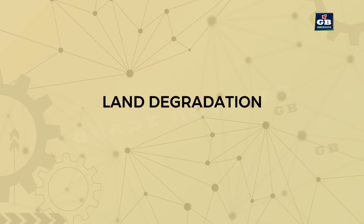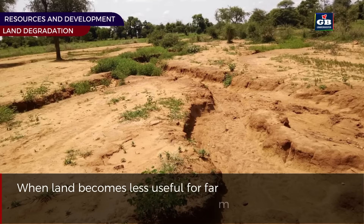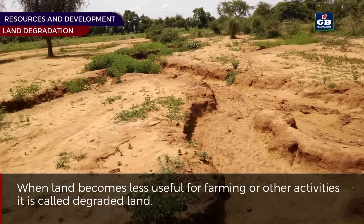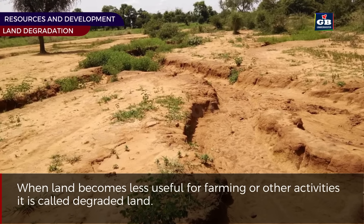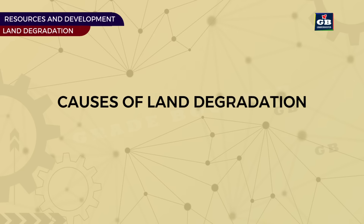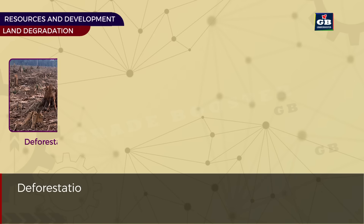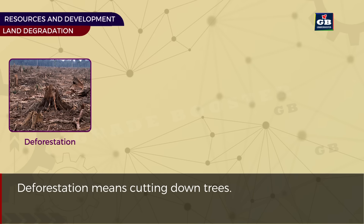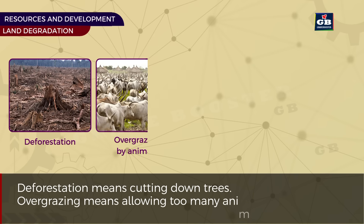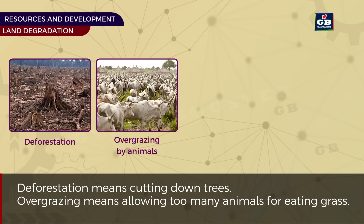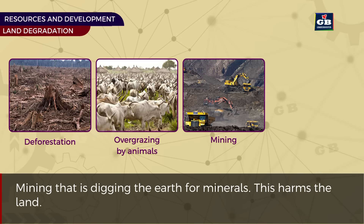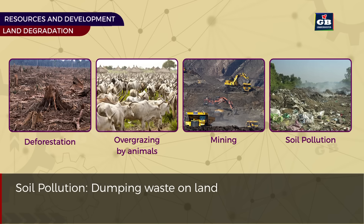Now let us look at land degradation. When land becomes less useful for farming or other activities, it is called degraded land. The causes of land degradation are: deforestation — cutting down trees; overgrazing — allowing too many animals to eat the grass; mining — digging the earth for minerals, which harms the land; and soil pollution — dumping waste on land.